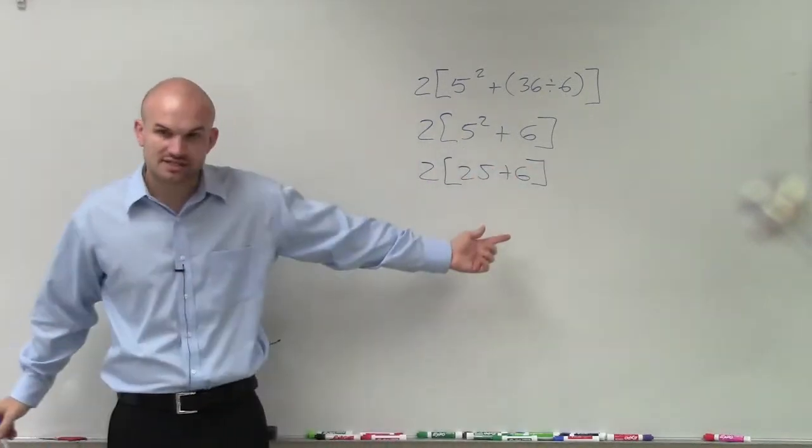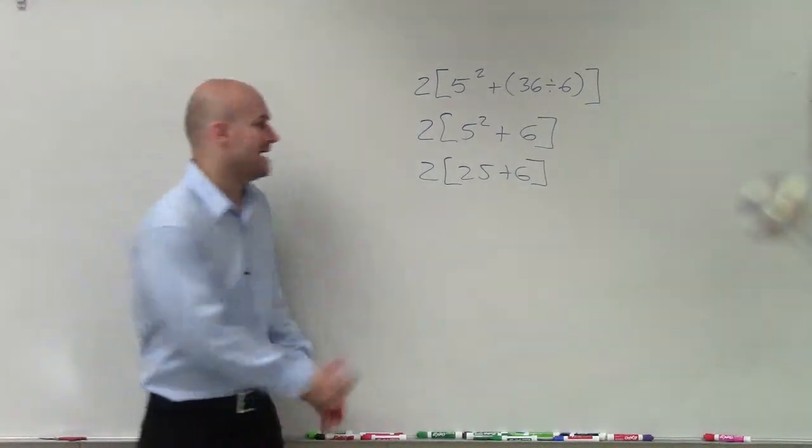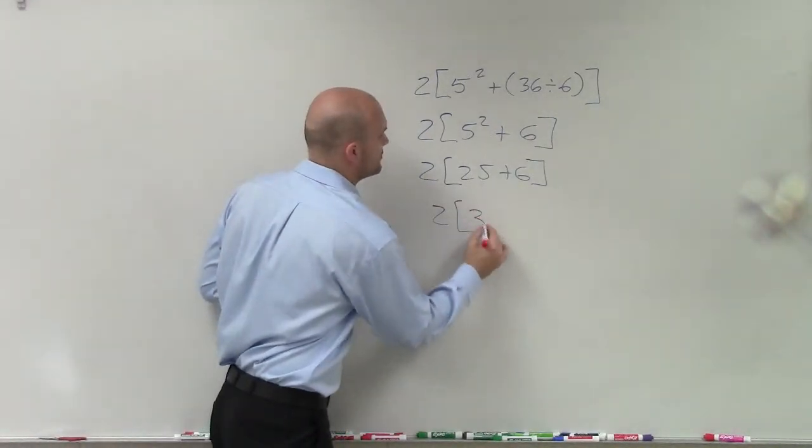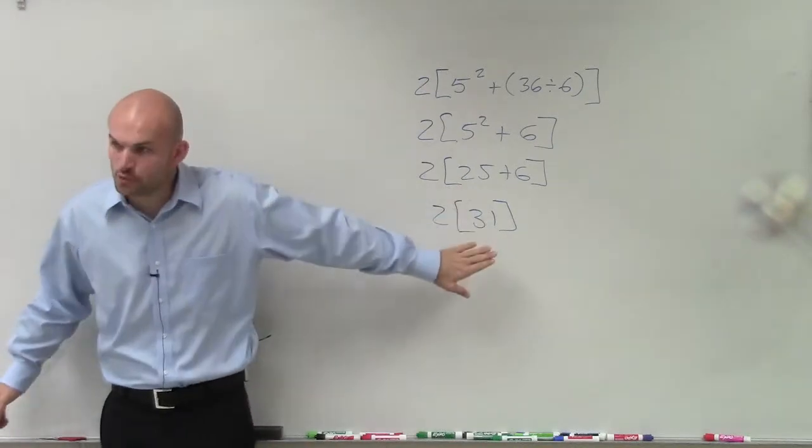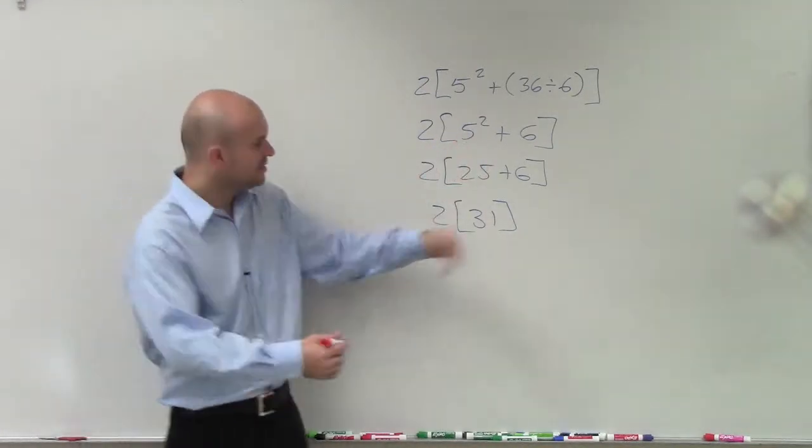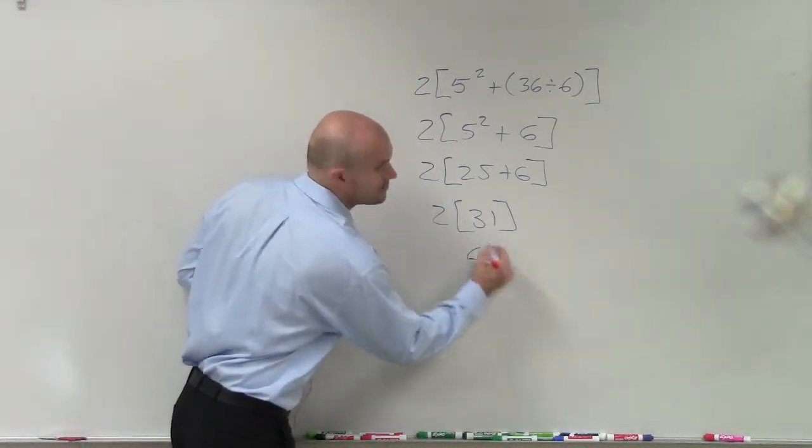Now, the last operation inside the parentheses is to add. So it would be 2 times 31. Now, a number outside a grouping symbol is applying multiplication. 2 times 31 is 62.